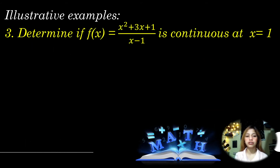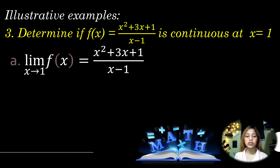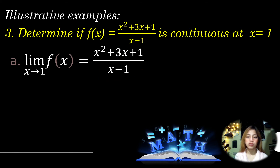For example, number 3: determine if (x² + 3x + 1) / (x - 1) is continuous at x = 1. Finding the limit using substitution, we can already see we will get an undefined value. The denominator is x - 1, so 1 - 1 = 0, giving an undefined value. Therefore, the limit of the given function does not exist, and it does not satisfy the first condition.